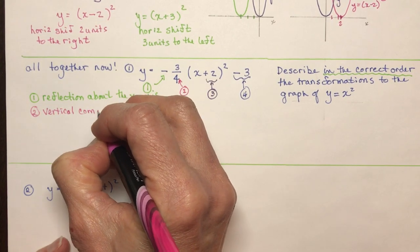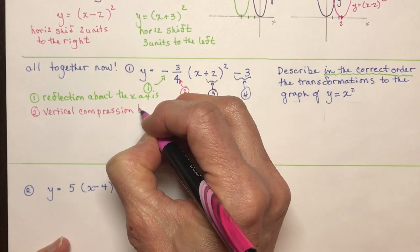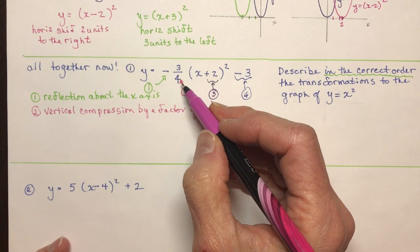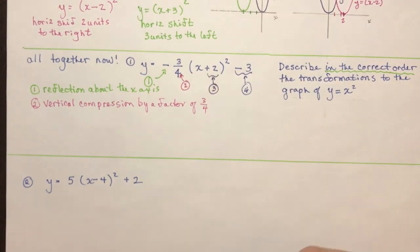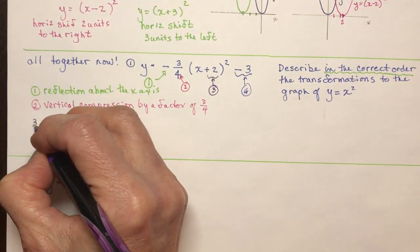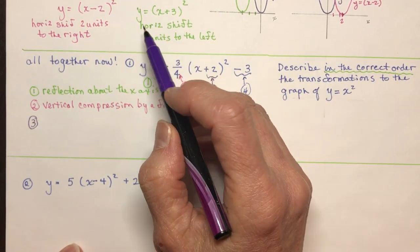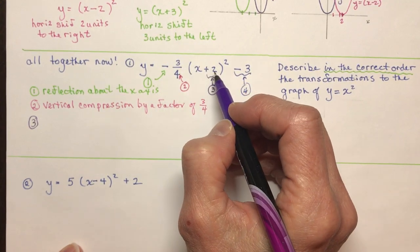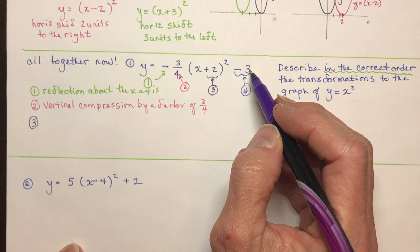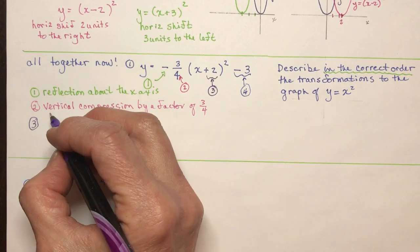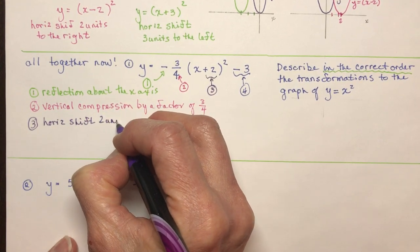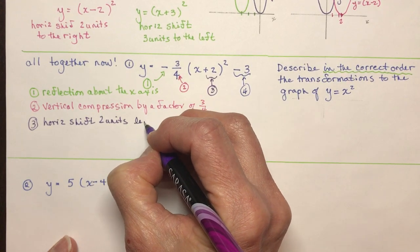If that were four-thirds, even though it's a fraction, it's greater than 1 and that would be a stretch — so just because you see a fraction, don't jump to the conclusion it's a compression; it has to be between 0 and 1. The third thing is the plus 2 inside the brackets — anything inside the brackets is horizontal. Since it says plus, it went to the left. So that's horizontal shift 2 units left.